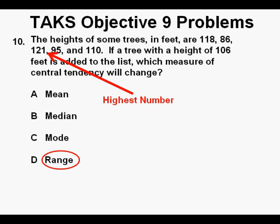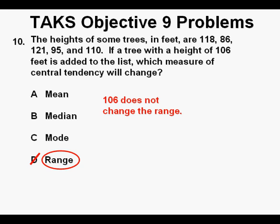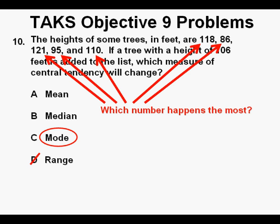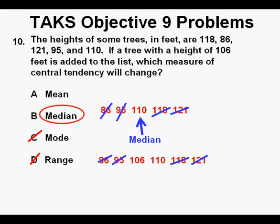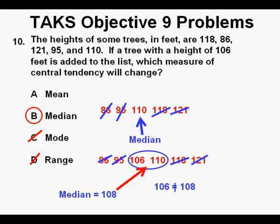For range: the highest number is 121 minus the lowest, 86. Since 106 falls between those two numbers, it will not change the range — cross off answer D. For mode: since none of the numbers occur more than once, including 106 after adding it, the mode will not change either — cross off answer C. For median: lining up all numbers in order and crossing off ends, the original median is 110. With 106 added, we have six numbers, leaving two in the middle — 106 and 110 — so the new median is their average, which is 108. Since 110 does not equal 108, the median changes, so B is the correct answer.